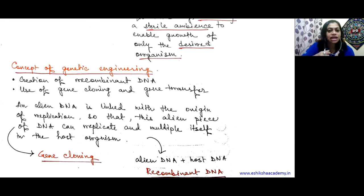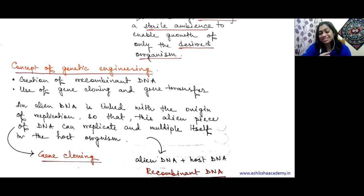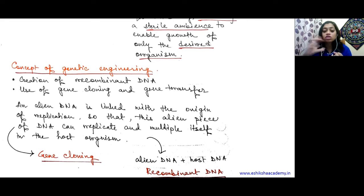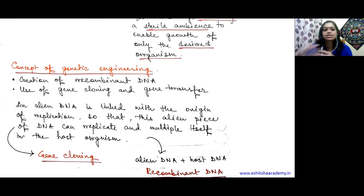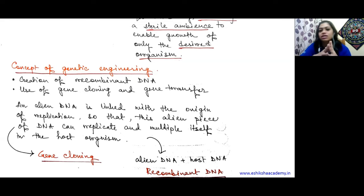Why sterile ambience? Suppose we culture bacteria. If we don't grow it in sterile conditions, other bacteria will contaminate it. When we try to purify the enzymes, a mix of enzymes from two organisms will be present. It will not be pure. If we are thinking about a particular product, it should be pure, because afterwards we test it, and if it is a vaccine it should be very pure. So we must always maintain a sterile ambience.